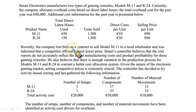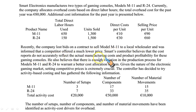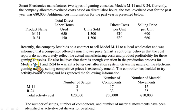Recently the company lost bids on a contract to sell model M11 to a local wholesaler and was informed that the competitor offered a much lower price. Our price is 90 euros — maybe they got it at 60 or 40. The controller believes that the cost reports do not accurately reflect the actual manufacturing cost, and that the product profitability for these gaming consoles is not accurate. There is enough variation in the production process for M11 and R24 to warrant a better cost allocation system.